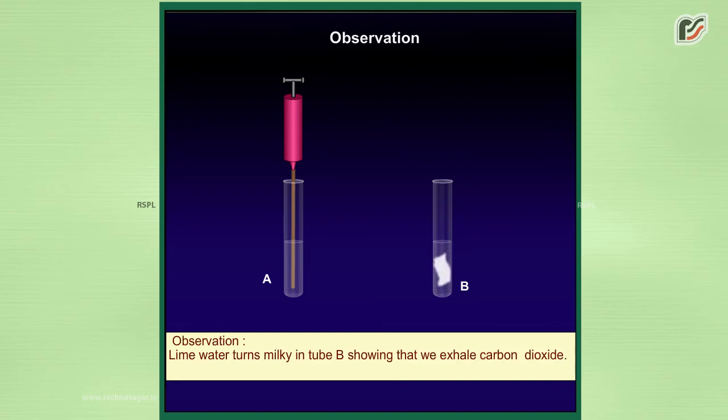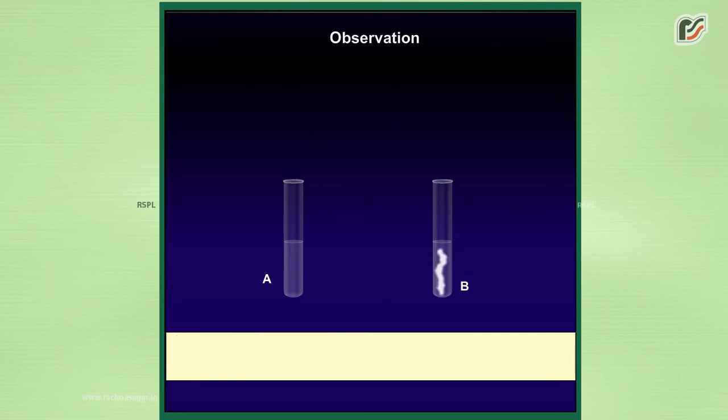Observation: lime water turns milky in tube B showing that we exhale carbon dioxide. On the other hand, lime water in test tube A takes long time to turn milky.